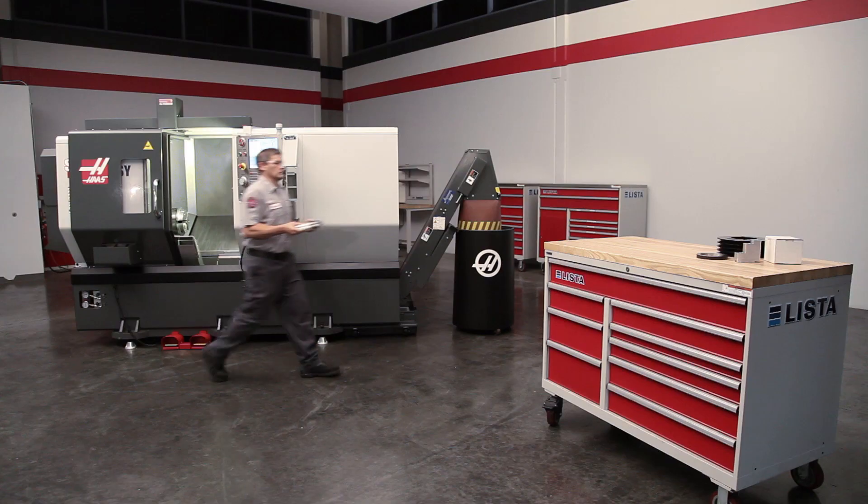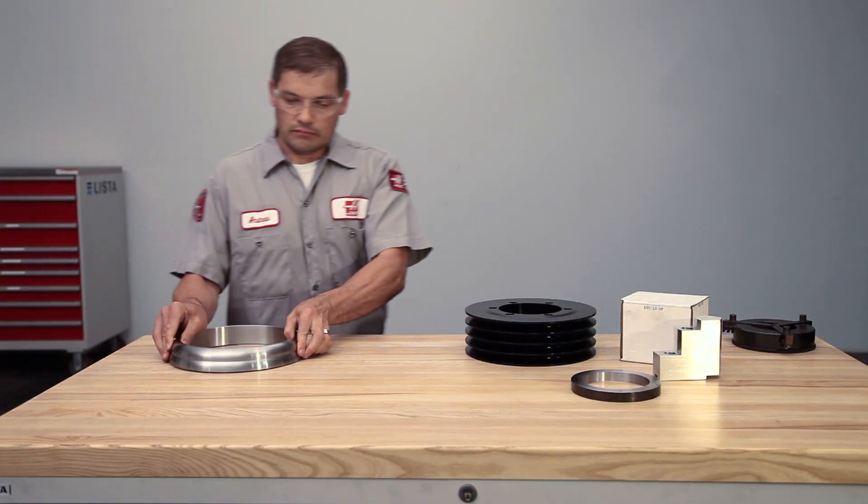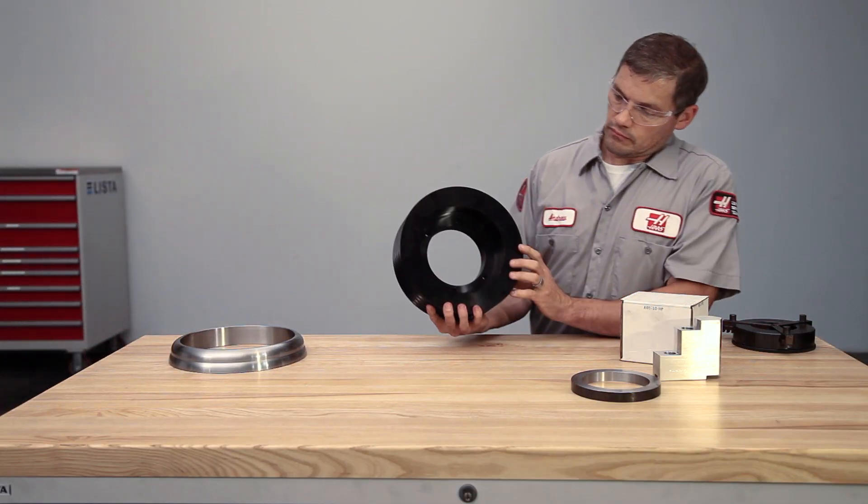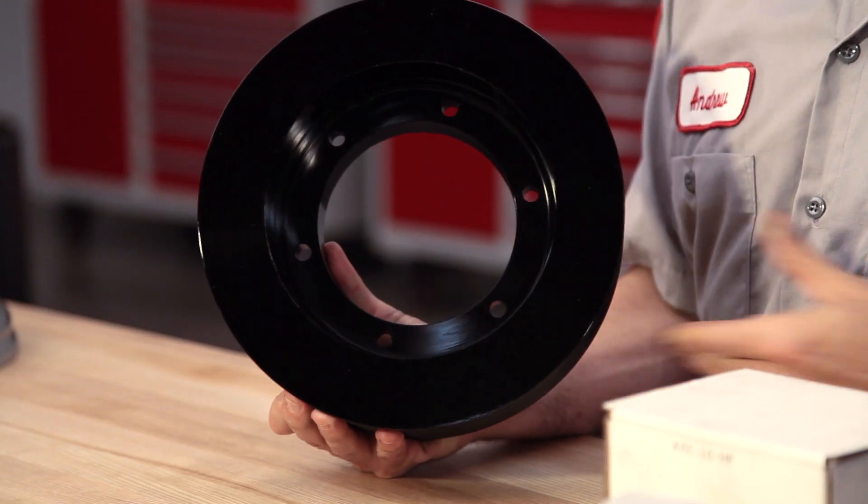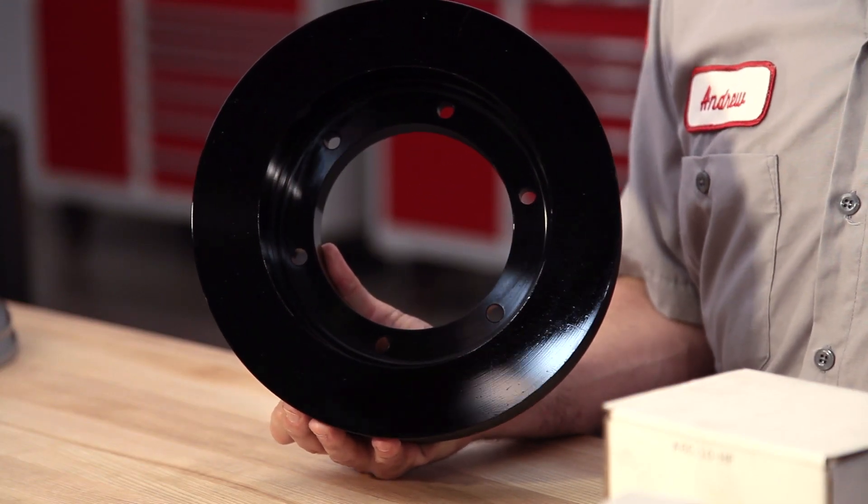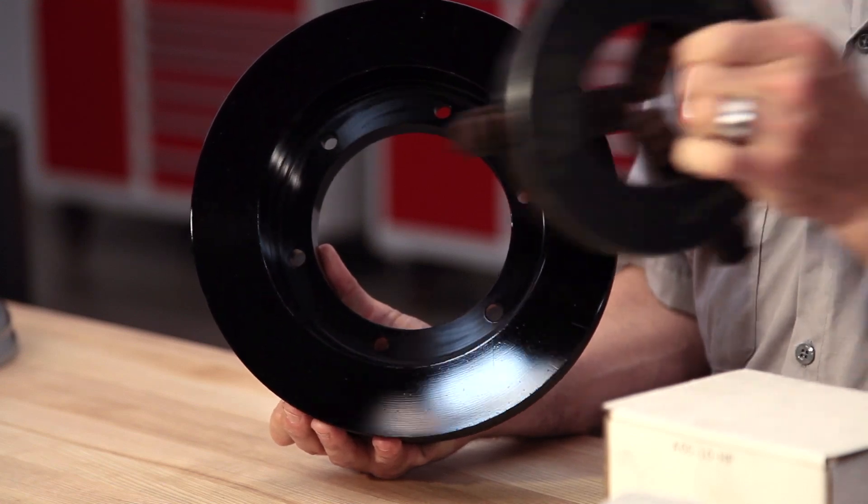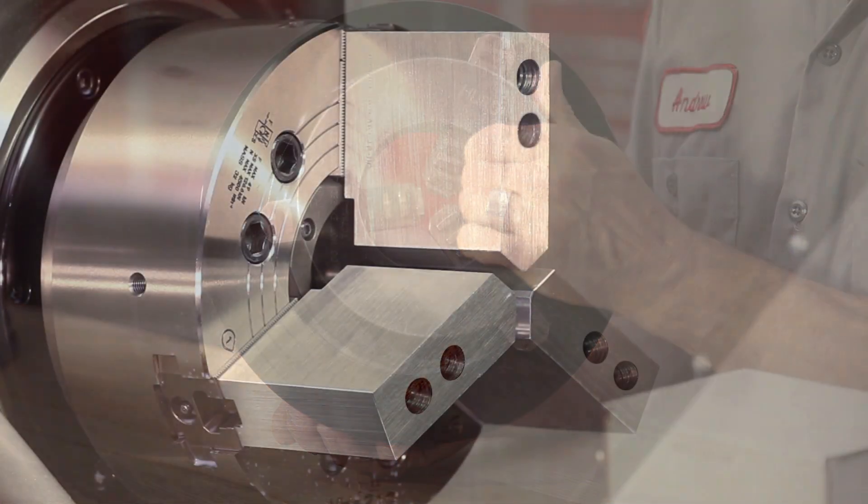Here is another example of a part that we want to ID grip. This pulley has sufficient wall thickness to allow us to use standard soft jaws. However, the part's inside diameter bore, which we want to grip, is so small that neither of our boring rings will fit inside of our cutting path.